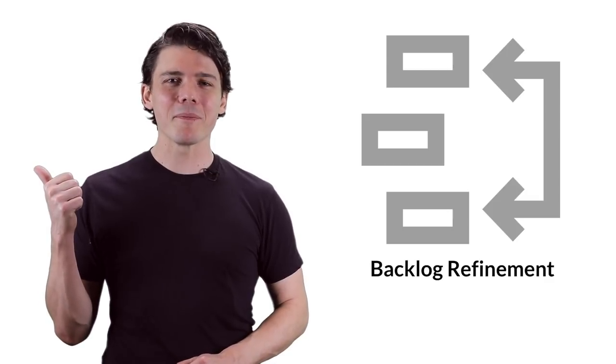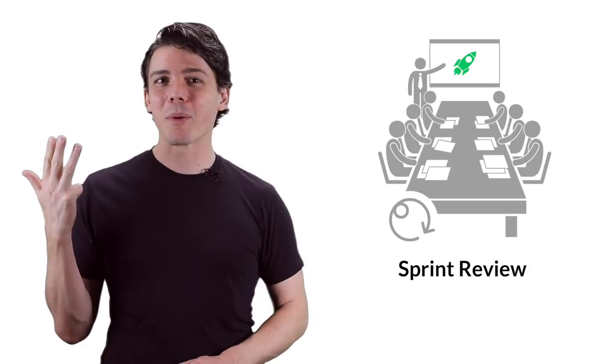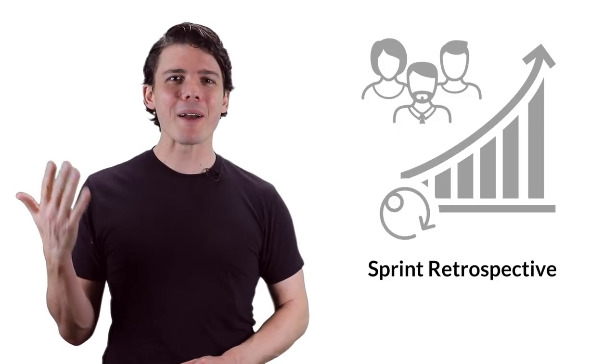This video will introduce you to the five most common events in Scrum. I've included dozens of unique tips and tricks that will help your team get the most from these events with the lowest time investment. The five events that I'll cover are Backlog Refinement, Sprint Planning, Daily Scrum, Sprint Review, and Sprint Retrospective. You can watch them all or click the links in the description to jump just to the section that you need. Enjoy, and thanks for watching.